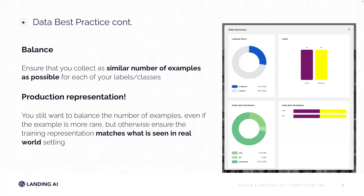We also want to consider how we're balancing training data for our models in Landing Lens. For each label or class in the platform, we want to get as equal a distribution as possible, because we want the model to better understand scratch versus hole in our metal casting example. It can be challenging to achieve that depending on very rare use cases, but you'll try to do the best you possibly can to get that equal distribution where possible. In some instances, leveraging manufactured, created, or synthetic data can help.